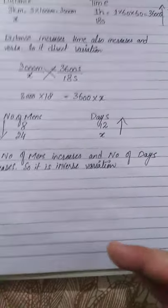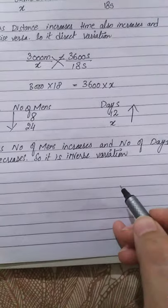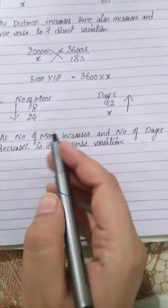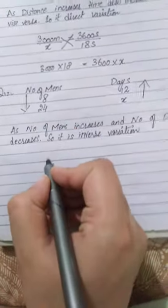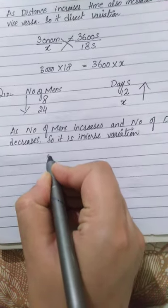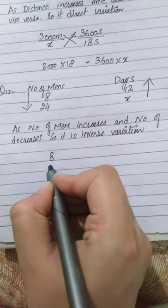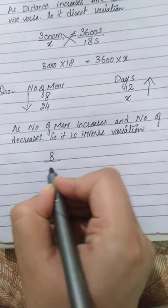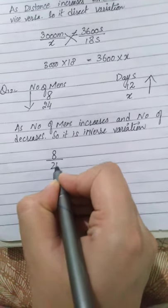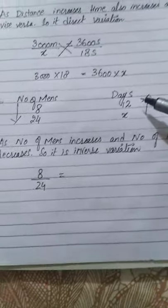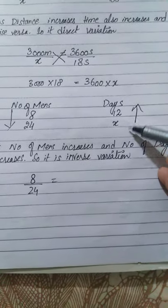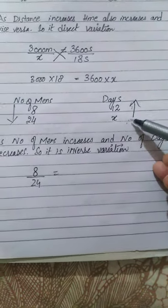This is an inverse relationship — inverse variation. In inverse variation, you write the number of men for the first and second statement as they are, while you take the reciprocal of the other side.